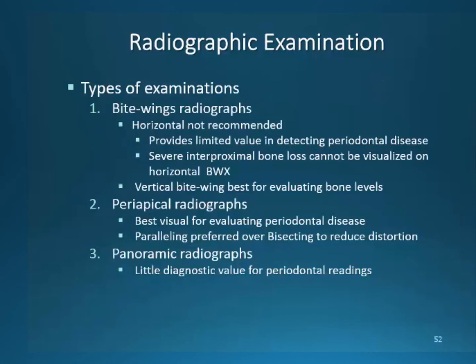Radiographs recommended for detecting periodontal disease are not the same as those for dental caries. Horizontal bite-wing radiographs are not recommended, as horizontal placement provides limited information on root areas. Vertical placement of bite-wing radiographs does serve to evaluate bone levels. However, in the early stages of periodontal disease, they can provide information on changes in the alveolar crest. Periapical radiographs are recommended and provide the necessary information for diagnosing and monitoring periodontal disease. The paralleling technique is preferred to reduce distortion — these films provide the earliest signs of the disease and its progression.